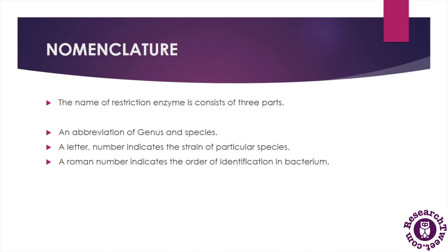Now let's understand the nomenclature of restriction enzymes. There are several rules for naming these enzymes. The name of any restriction endonuclease consists of three parts: first, an abbreviation of genus and species from which bacterium the endonuclease was isolated; second, a letter or number indicating the strain of that particular species; and third, a Roman numeral indicating the order of identification of that endonuclease in the particular bacterium.